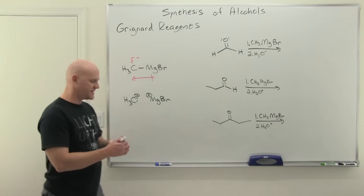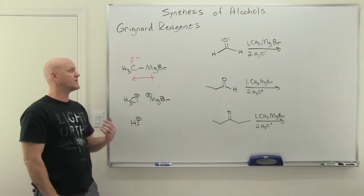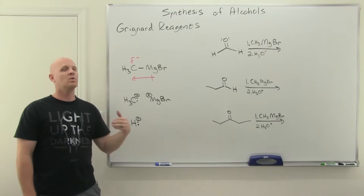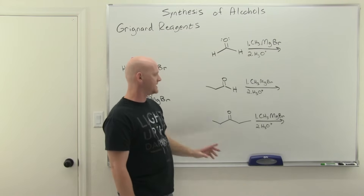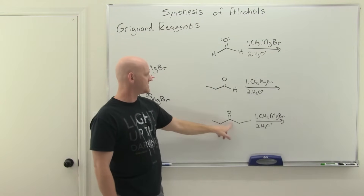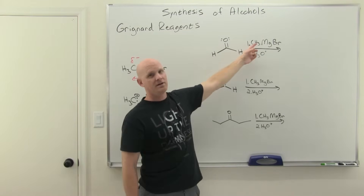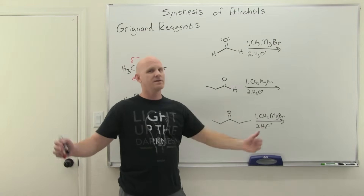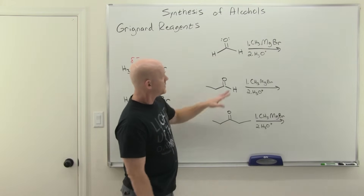We treat the Grignard reagent as if it has a carbanion because that makes reactions easier to understand. It's analogous to lithium aluminum hydride, which delivered an H-minus hydride ion. With LiAlH4 we could attach a hydrogen to a carbonyl carbon; now with Grignard reagents we can attach a carbon to a carbonyl carbon. We can react with formaldehyde, a regular aldehyde, or a ketone.